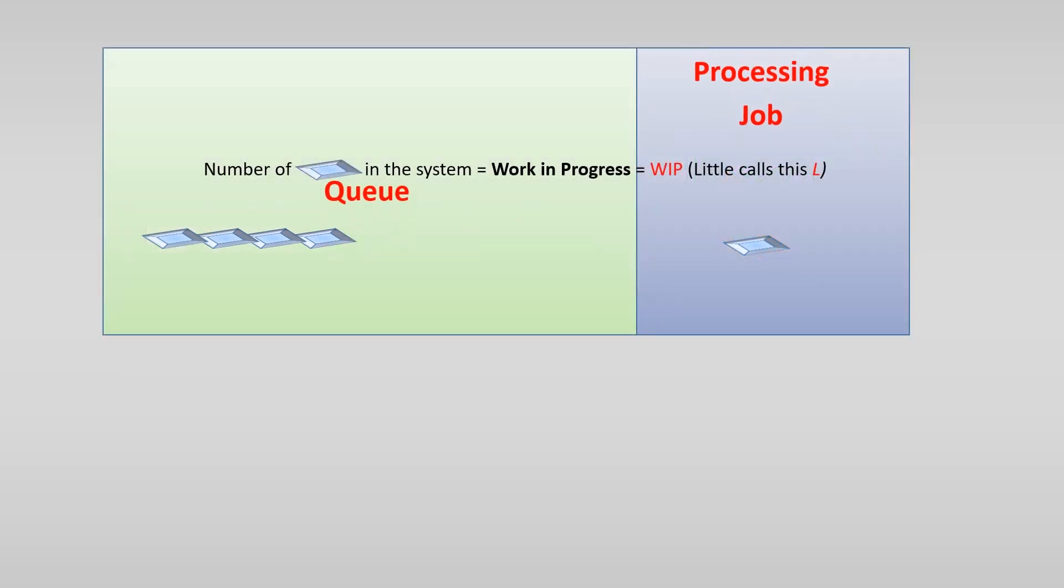We call the number of products the work in progress, or WIP. And we want to know how many items are in this queue. By the way, Little calls WIP with the letter L.